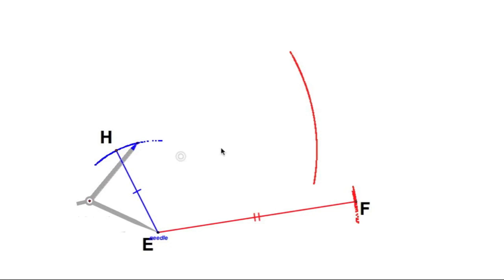Pick up the locking compass and put the needle on F. When I swing that arc, you can see what's happening—that gives me a point of intersection. This point of intersection is special because that's our point G.